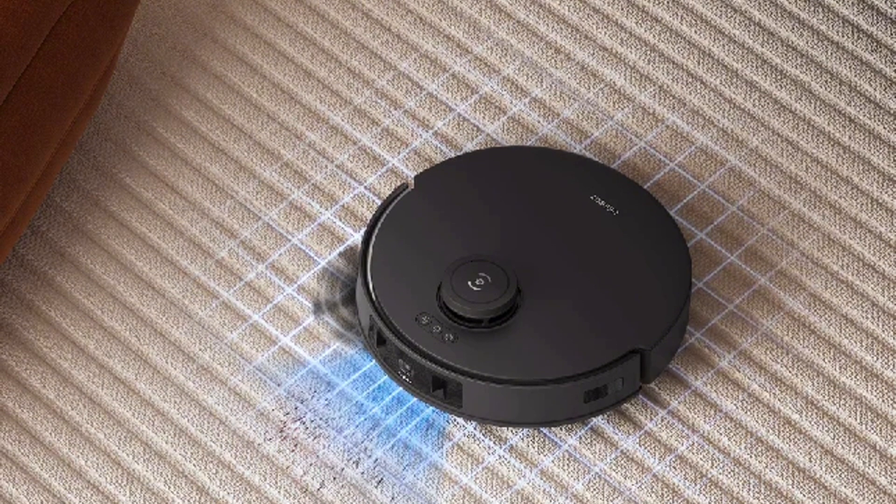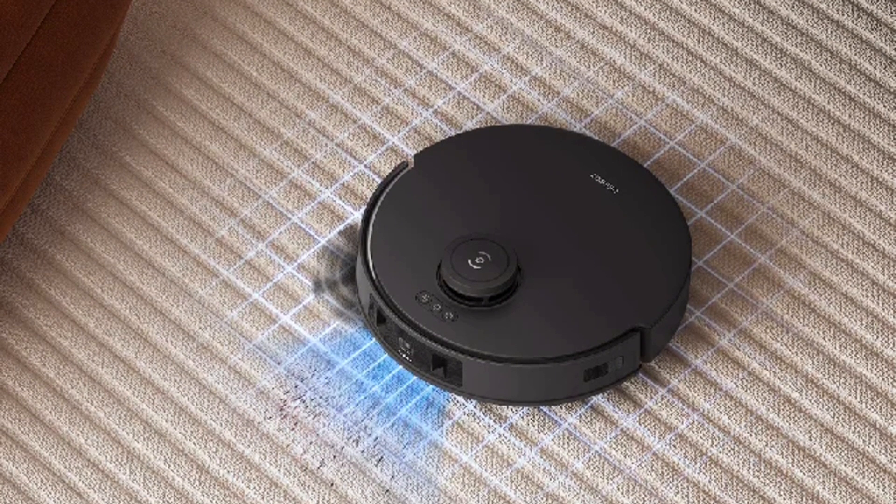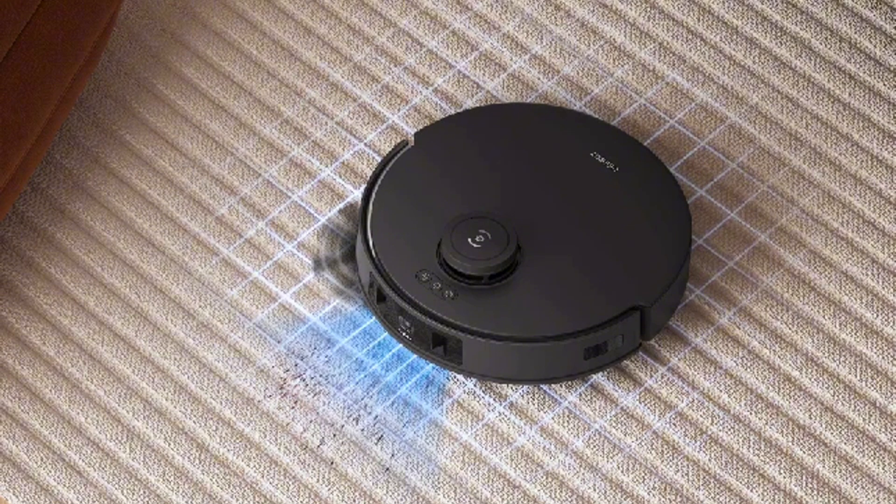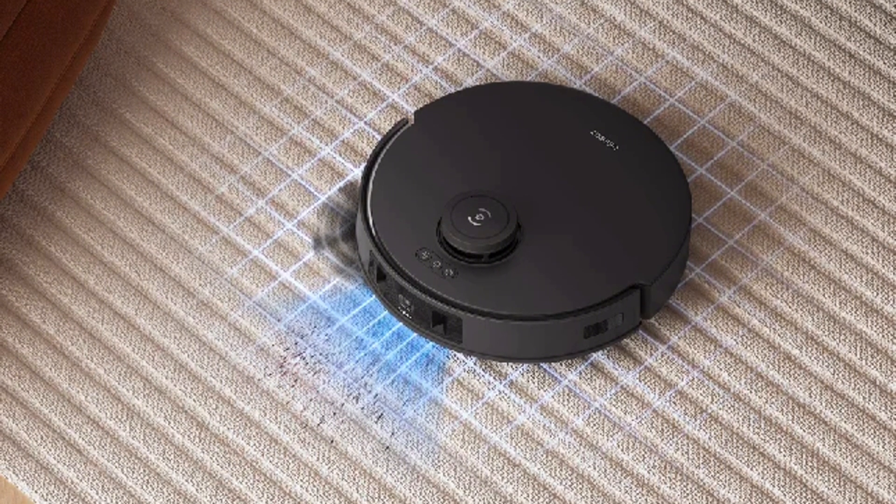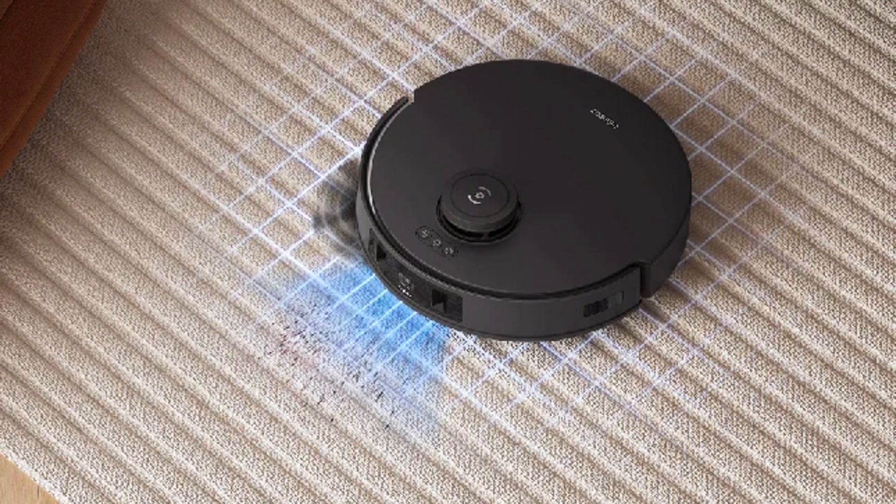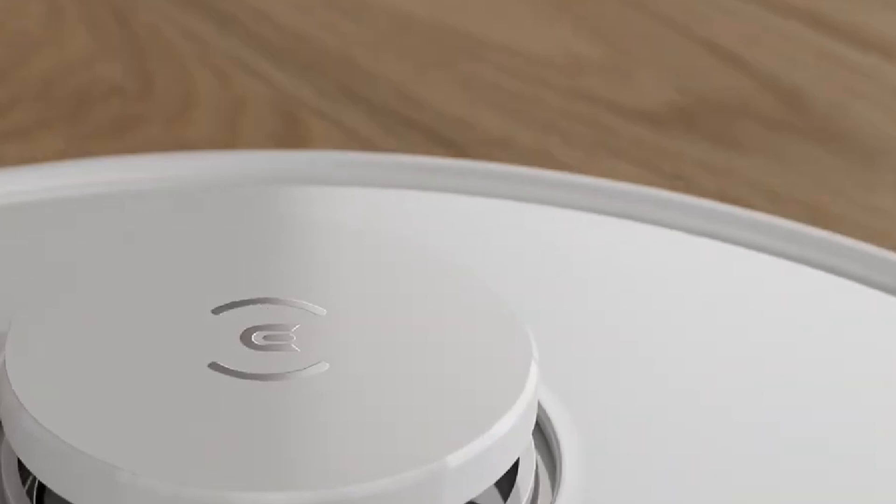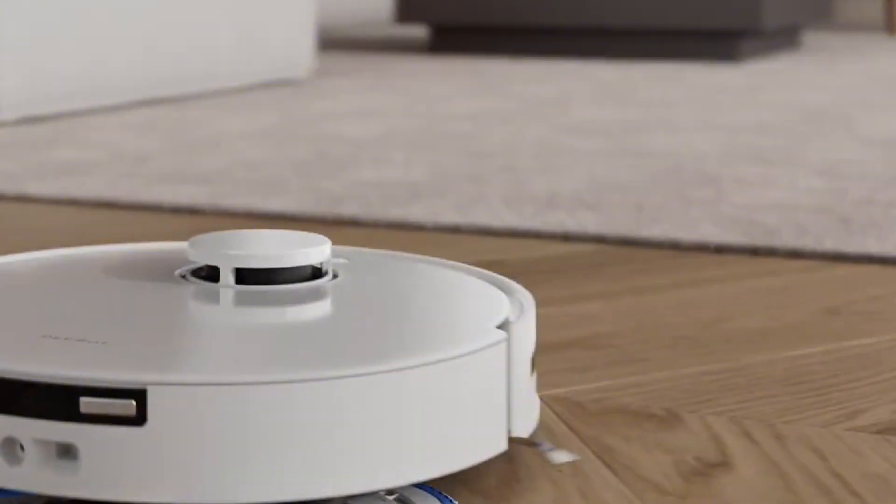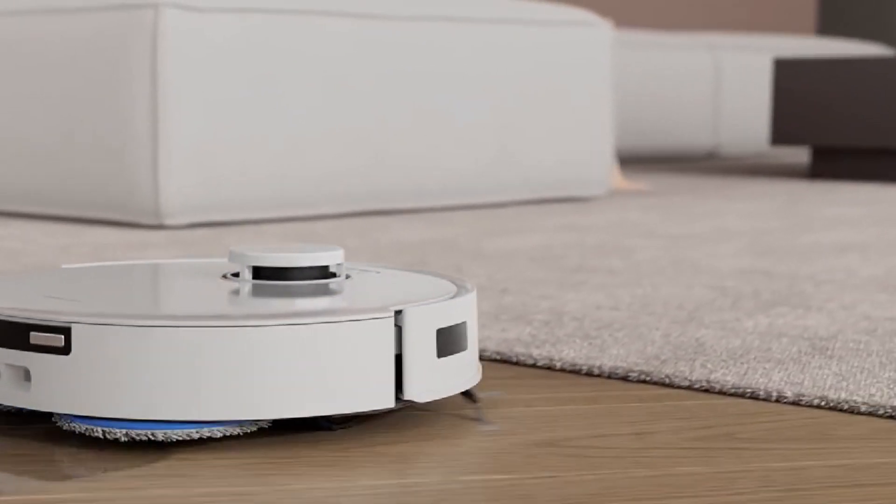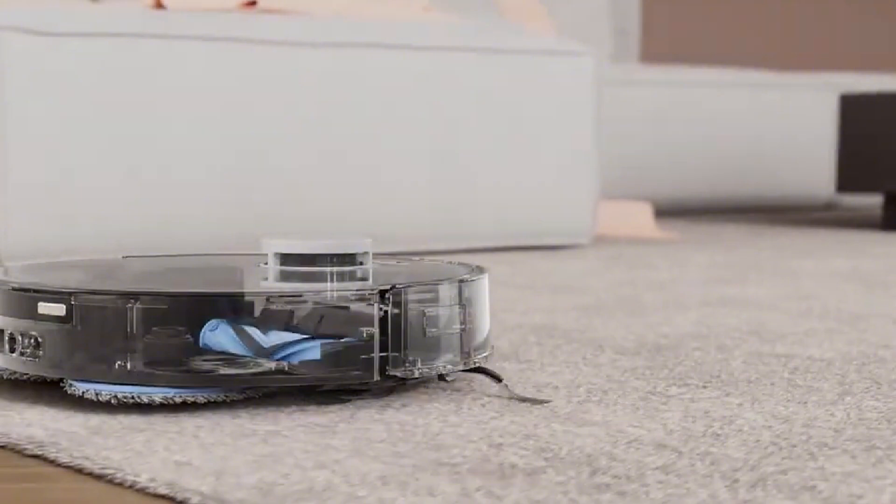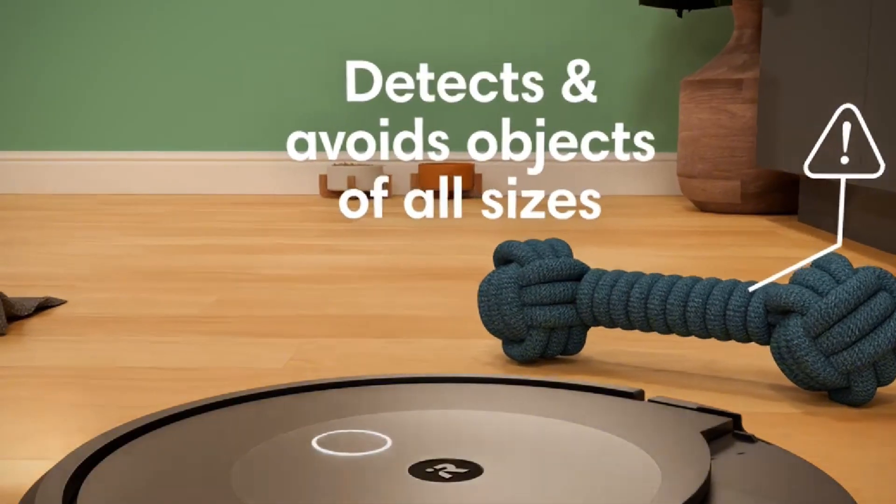In terms of mapping and navigation, both robots offer smart technology to efficiently clean your home. The Roomba 10 utilizes iRobot's patented smart mapping technology, allowing it to learn the layout of your home and adapt its cleaning path accordingly. While the D-Bot T30 also employs advanced navigation technology, it incorporates the ability to map your home in real time, which helps to optimize cleaning routes further.